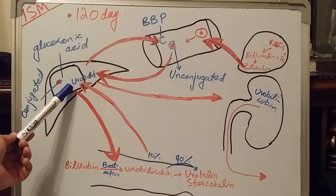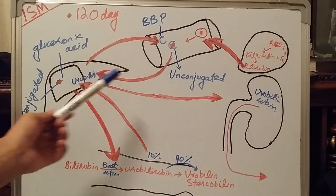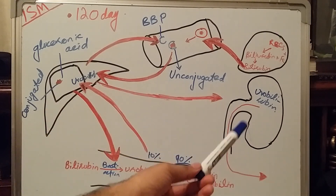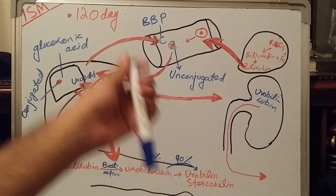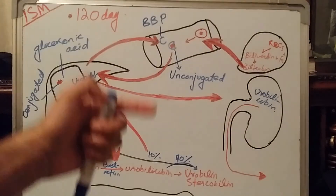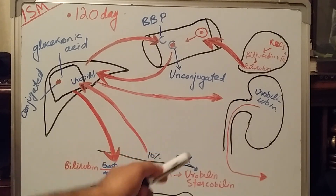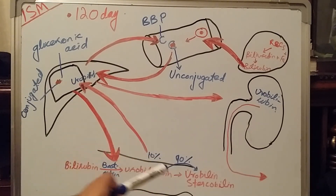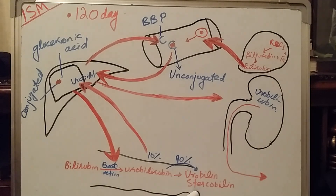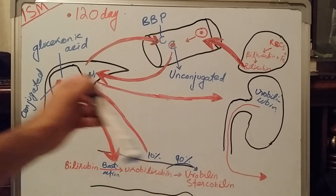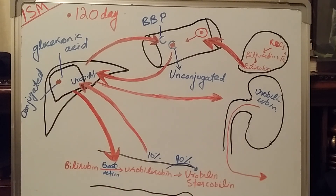Once the remaining 10% reaches the liver, it is again sent to the kidney. In the kidney it is incorporated into the urine and excreted out of the body. So there are two pathways: one in the form of urobilin-stercobilin via feces, and another in the form of urobilinogen via urine. That is how bilirubin is secreted out of the body.